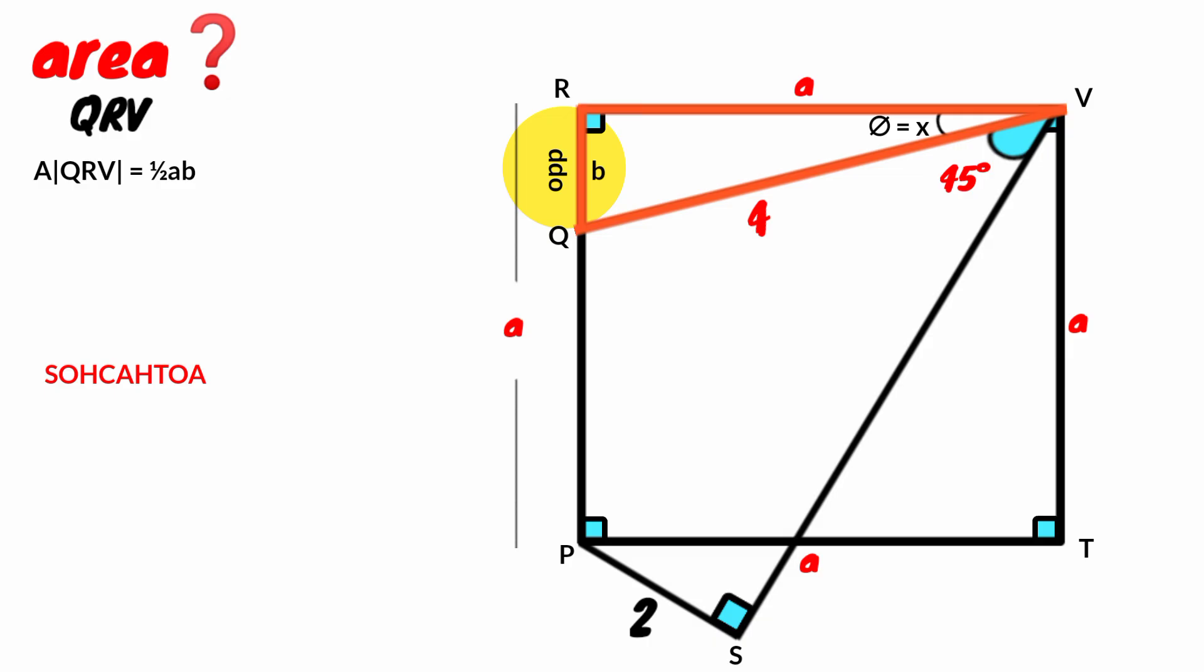This is the opposite equal to B. Adjacent equal to A and hypotenuse equal to 4.